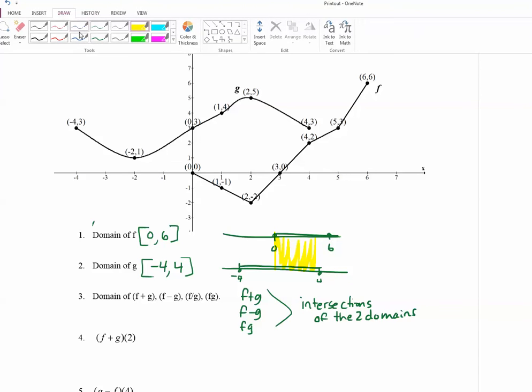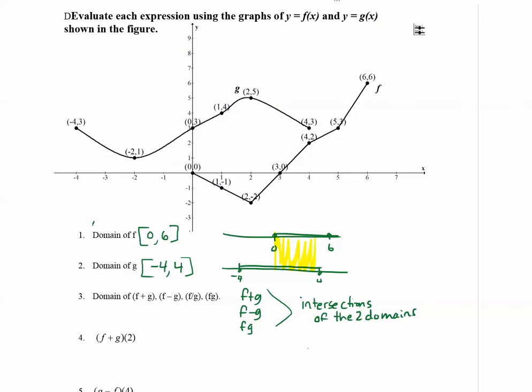So the overlapping region there is going to be from 0 to 4. And that's going to be the domain for the addition and subtraction and multiplication of the functions. So the domain is [0, 4].